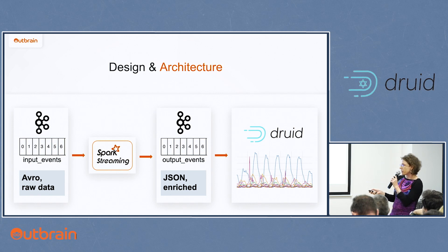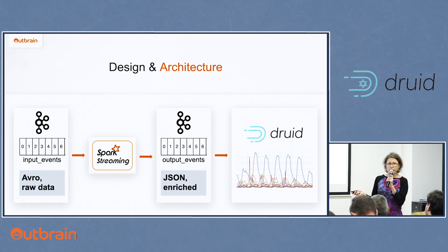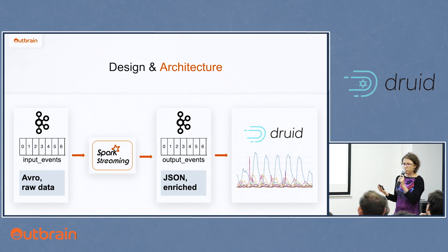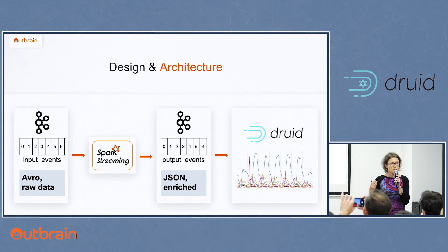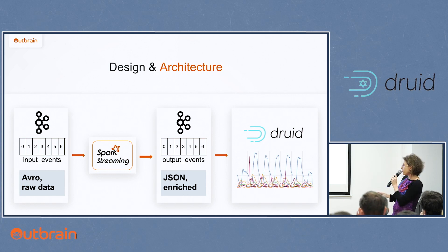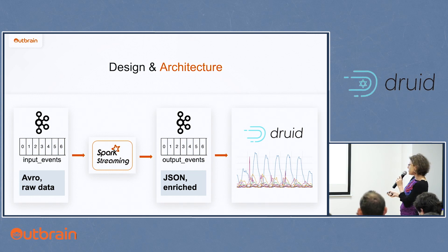Having these constraints in mind, we came up with the following architecture. We have our original Kafka raw data in our custom format. We added Spark Streaming jobs that consume these events, open our format, write the output in JSON, and perform several kinds of enrichment — adding publisher name, marketer name, and many other fields to every event. The Spark Streaming job reads from one Kafka topic and writes to another Kafka topic in JSON enriched format, which is then ready to go to Druid.